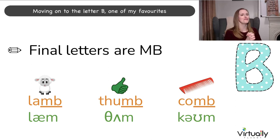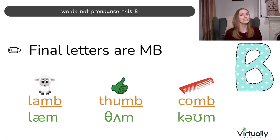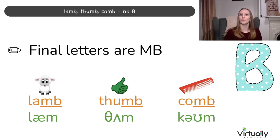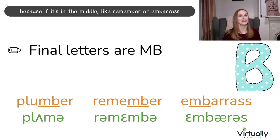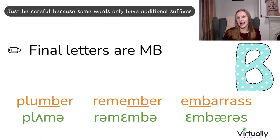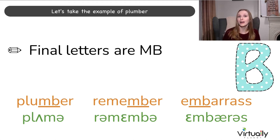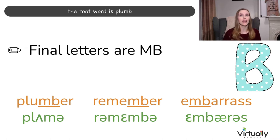Moving on to the letter B — one of my favourites. When the final two letters of the word are MB, we do not pronounce the B. It's really important that this is at the end of the word, because if it's in the middle like 'remember' or 'embarrass', we do hear the B. Some words only have additional suffixes — take 'plumber': it has a silent B only because ER is an additional suffix. The root word is 'plumb', plumber.